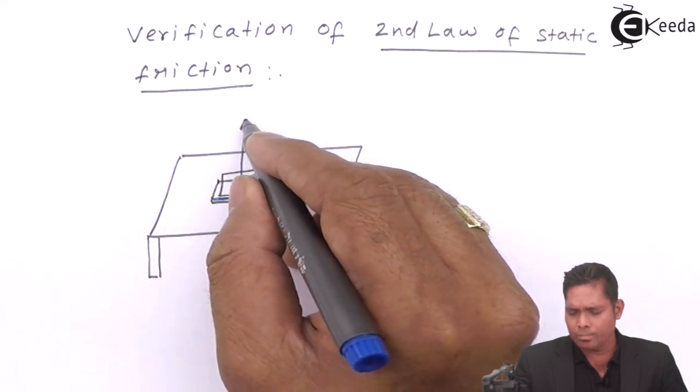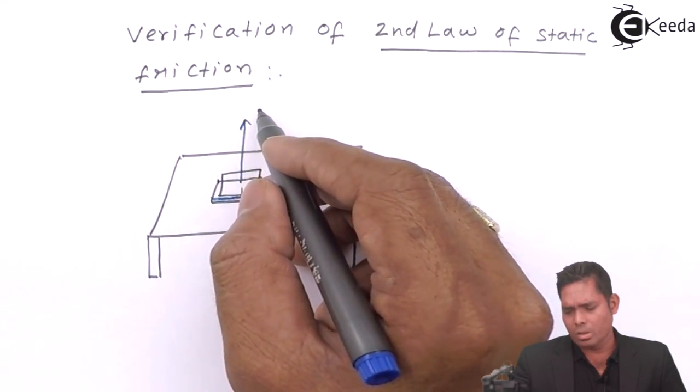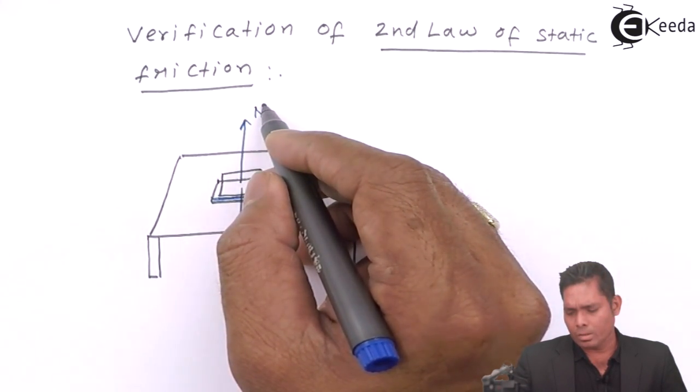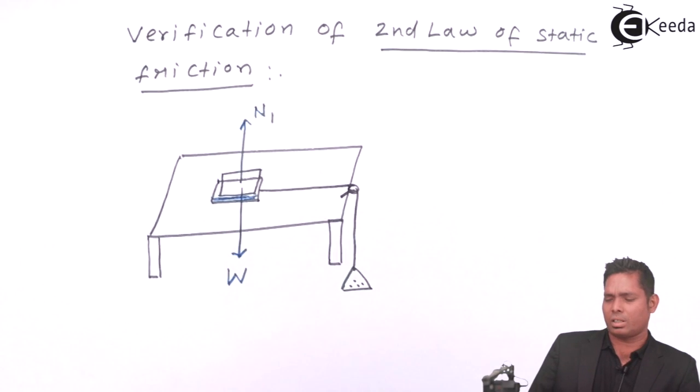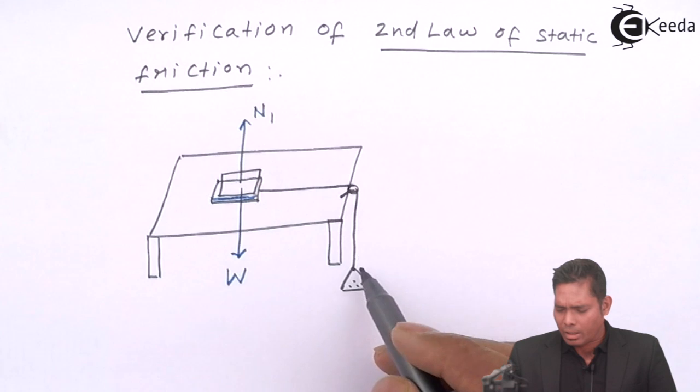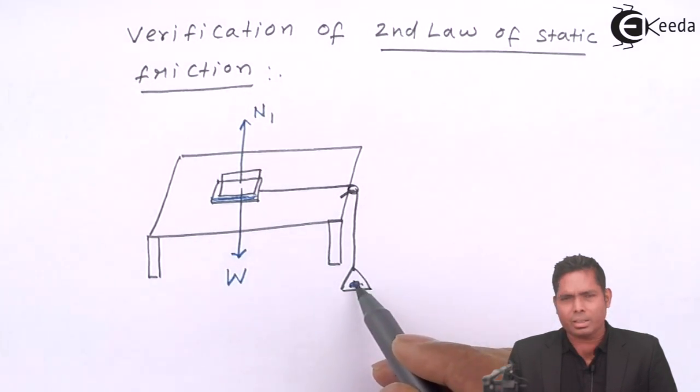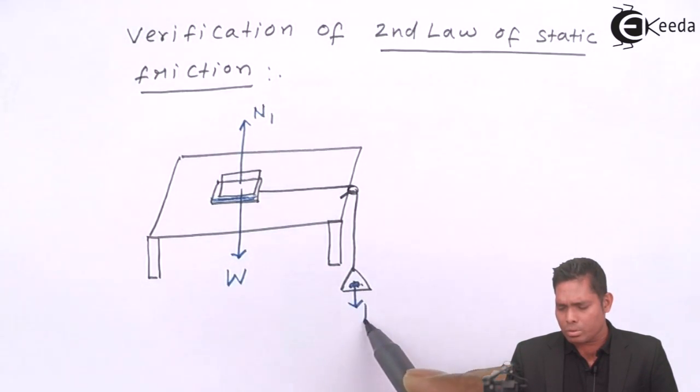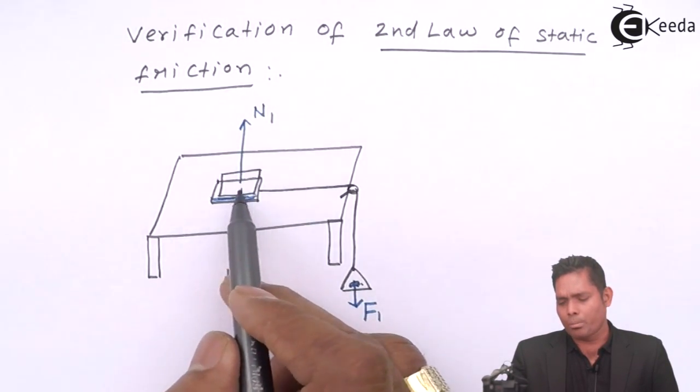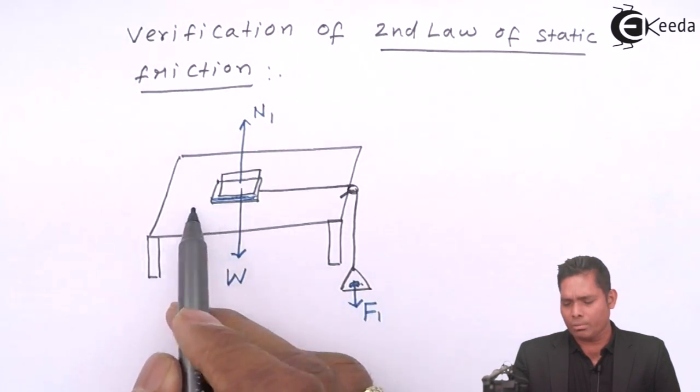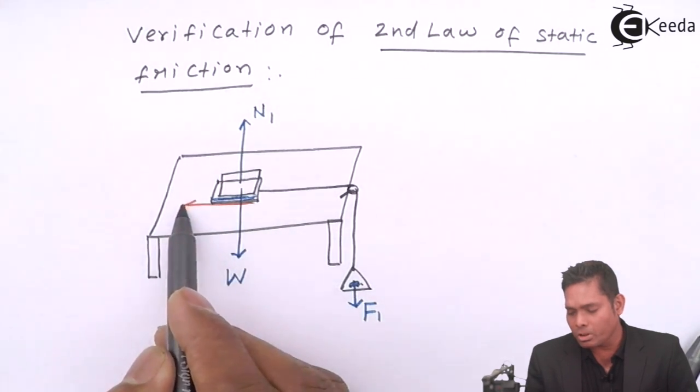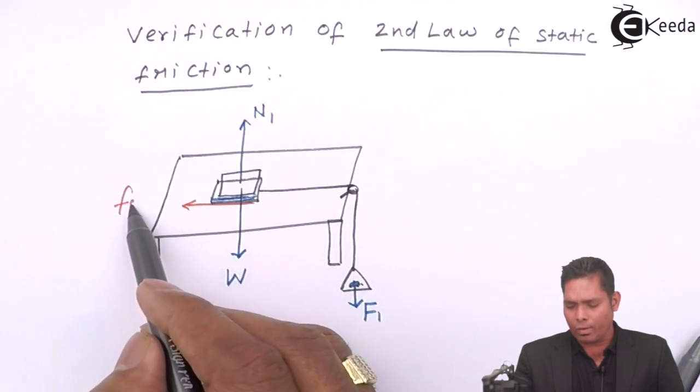Now, the normal reaction is, because of first one, the normal reaction is, I will say, in this case, situation, suppose the normal reaction is N1. First case. And the mass that I have added is M1 and which creates a force, a downward force F1. It is the pulling force, the driving force responsible for the block to move along this direction. And because of this, there is a friction in the opposite direction, that is Fs1.